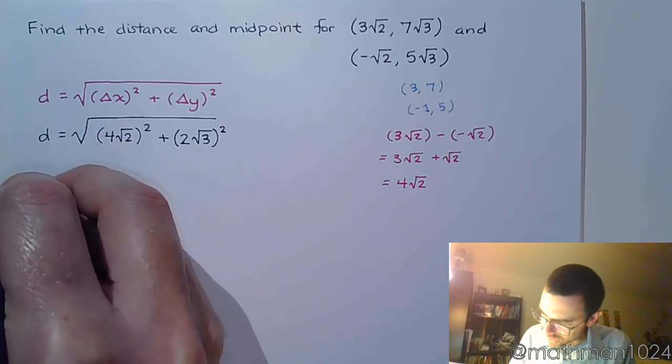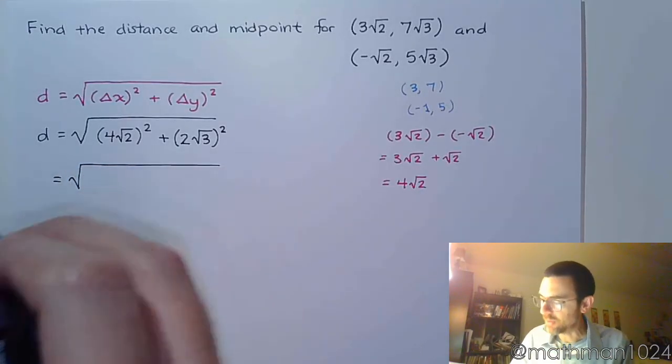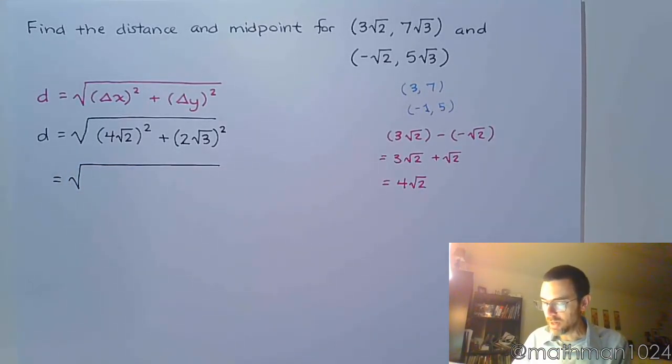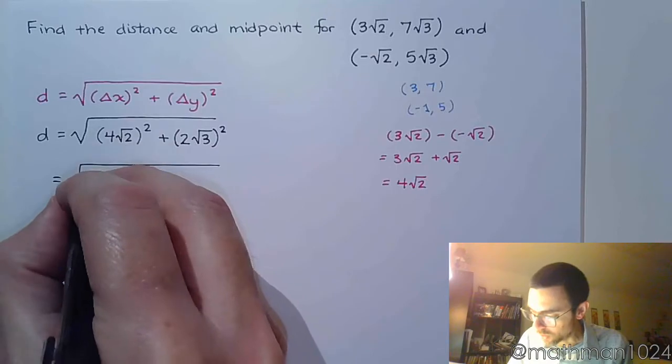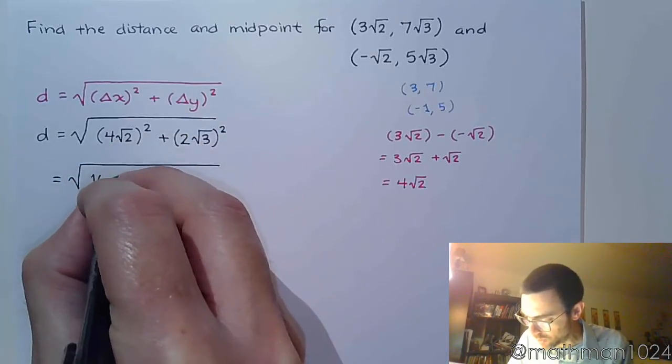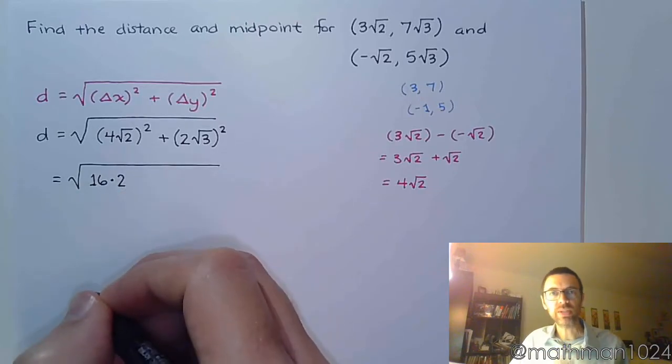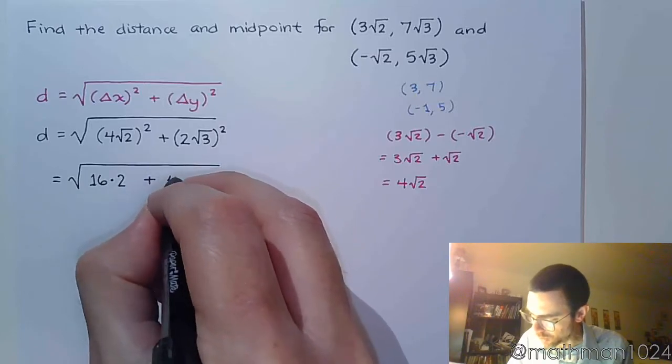Now we just have to work out this radical. Now this is not the most fun thing we've ever seen, but it is going to work out okay. When you square this, let's do it a piece at a time. You square the 4 to get 16. You square the square root here to give you 2. So it's going to be 16 times 2.